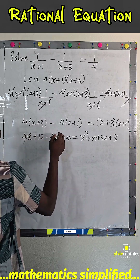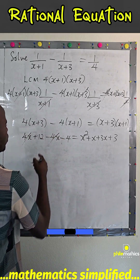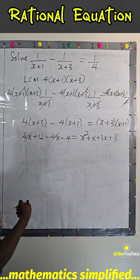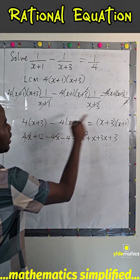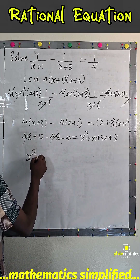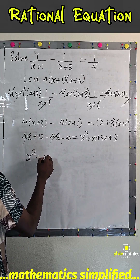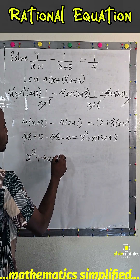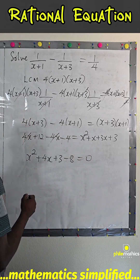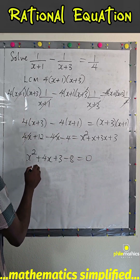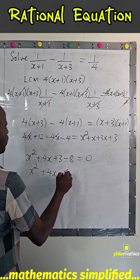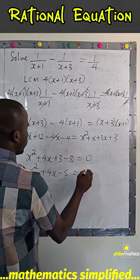This simplifies. 12 minus 1 is... 12 minus 4 is 8. If I take it to the right-hand side, I have x squared plus 4x plus 3, minus 8, equals 0. That gives x squared plus 4x minus 5, equals 0.